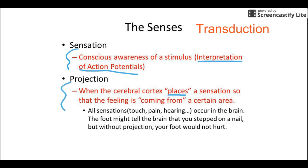The next concept is transduction. It's whenever a receptor converts whatever the stimulus is into an action potential. When your eye takes photons and converts them into an action potential, or pressure in your finger gets converted by a touch receptor, or chemicals on your tongue get converted — that changing of information, from chemical or light into an action potential, is transduction. That's what all your receptors are capable of, and that's what makes them special.